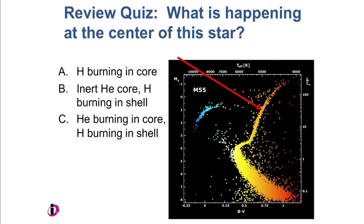We've got a beautiful HR diagram of a cluster here, a globular cluster, and I want to know what's going on in the center of that star right there. Is hydrogen burning in the core? Is it an inert helium core with a hydrogen burning shell, or is it helium burning in the core with a hydrogen burning shell?